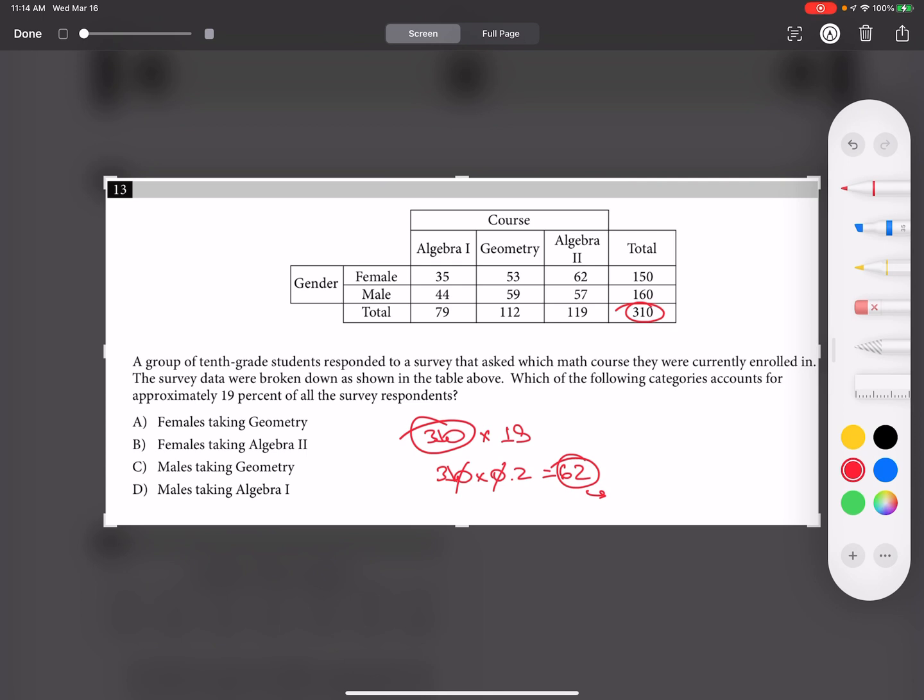I have 62. The other lower value is 59. That is male geometry, so males taking geometry.